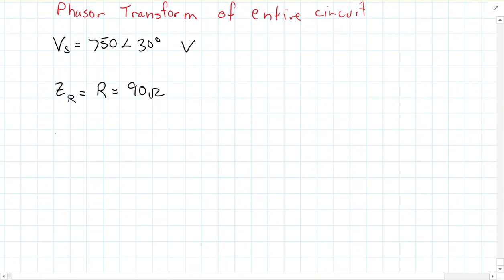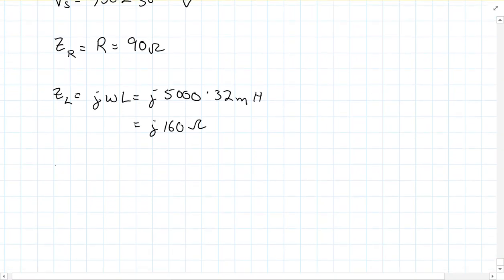But we actually have to compute the impedance of the inductor and the capacitor. And so the impedance of the inductor, remember the formula for that is J omega L, which would be J, and in this problem, my omega is 5,000 times my inductance, which is 32 millihenries. And if you do this computation, you get J 160 ohms. And then if we do this for the capacitor, remember this is 1 over J omega C, which is the same thing as negative J over omega C. So that's going to be negative J over omega, which is 5,000 times 5 microfarads, which gets you negative J 40 ohms.